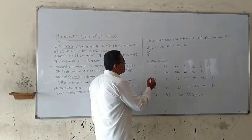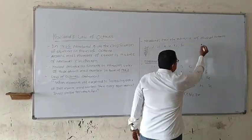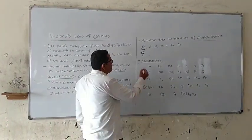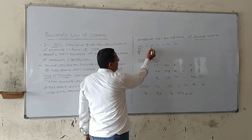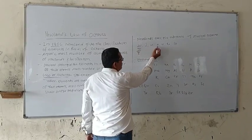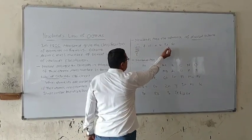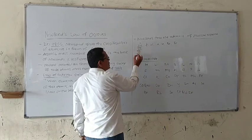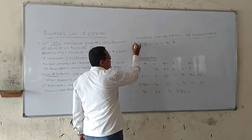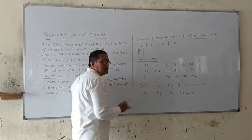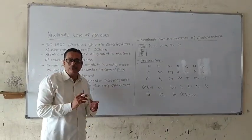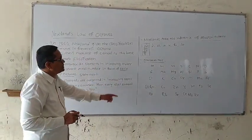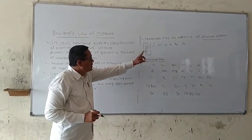Newland took the reference of musical octaves — this musical octaves analogy is very important. Just like Sa, Re, Ga, Mo, Pa, Dha, Ni, and Sa — where the first position and eighth position are the same. On the basis of this musical octaves analogy, Newland formulated a law called the Law of Octaves.